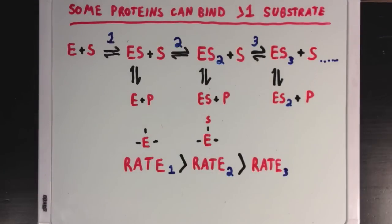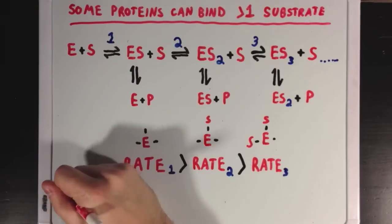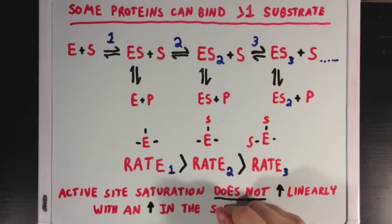Similarly, rate 2 would be faster than rate 3 for the same reason. And the idea is that the active site saturation does not increase with substrate concentration linearly. I get that that can be a mouthful, so let's look at it graphically, but we're also going to show an exception to this rule.